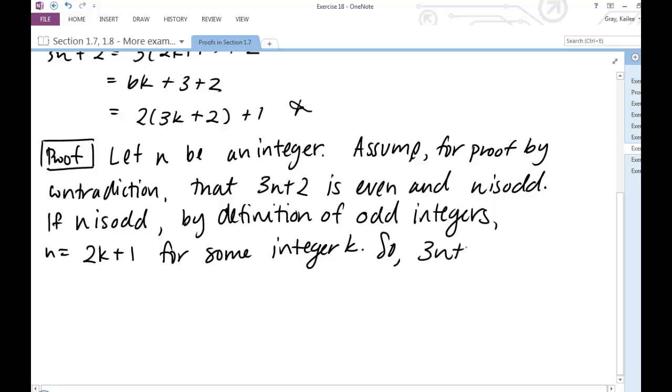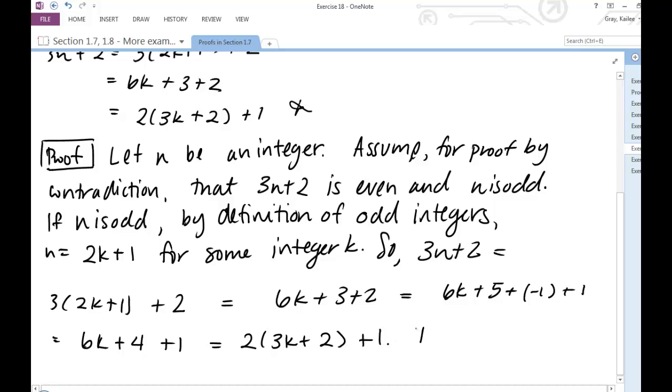So 3n plus 2 equals 3 times 2k plus 1 plus 2, which is equal to 6k plus 3 plus 2, which is equal to 6k plus 5, which is equal to 6k plus 4 plus 1, which is equal to 2 times 3k plus 2 plus 1.